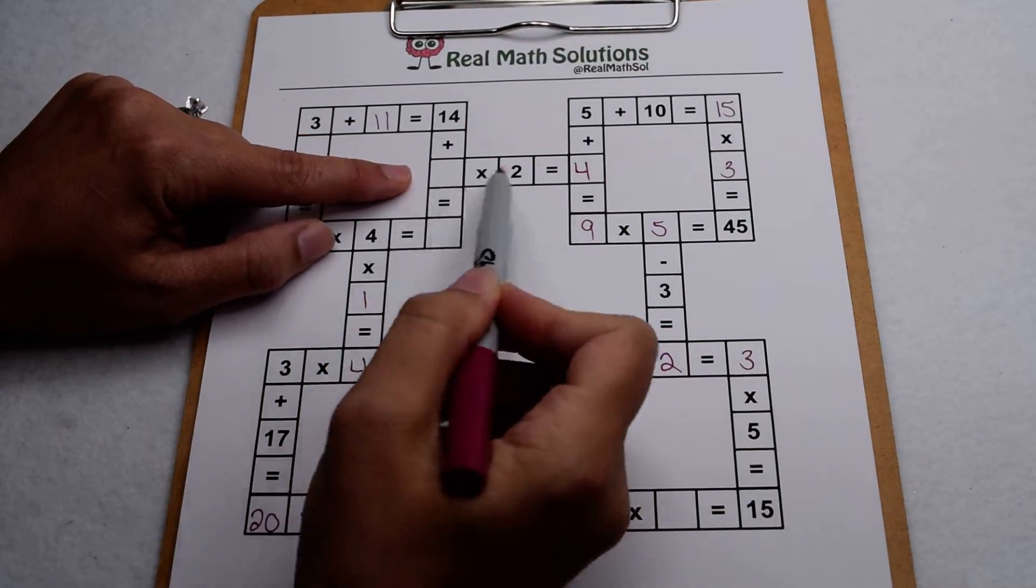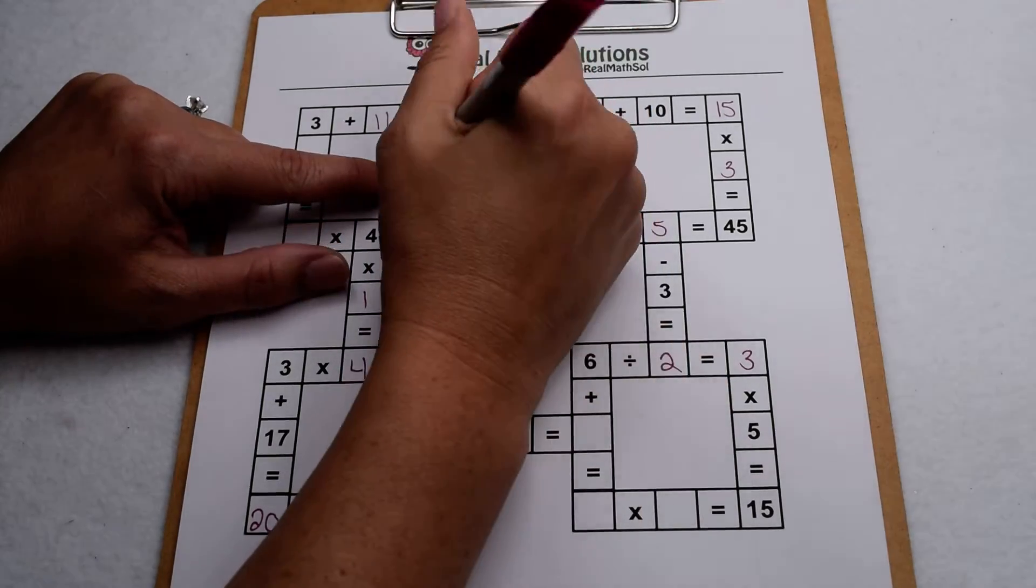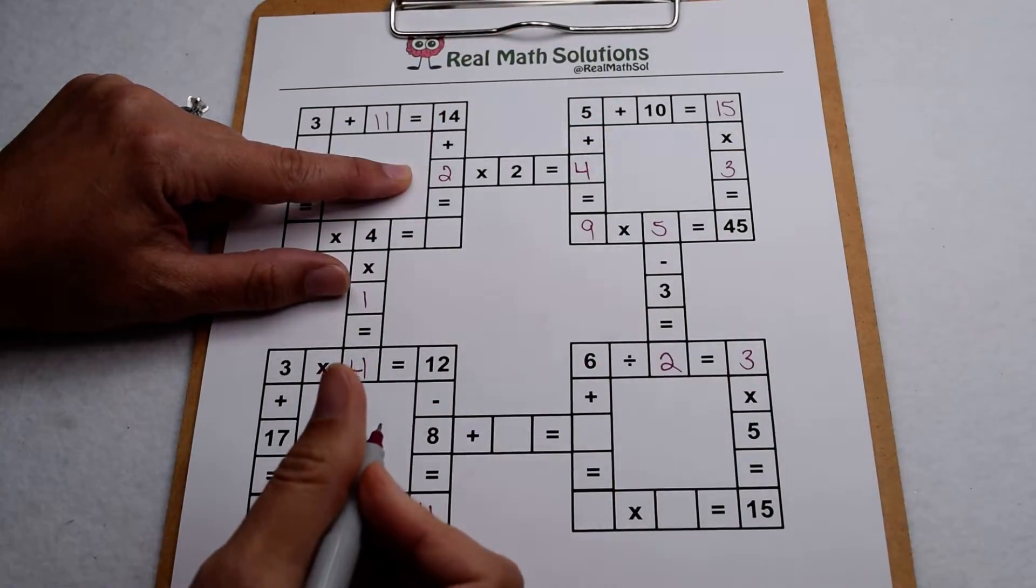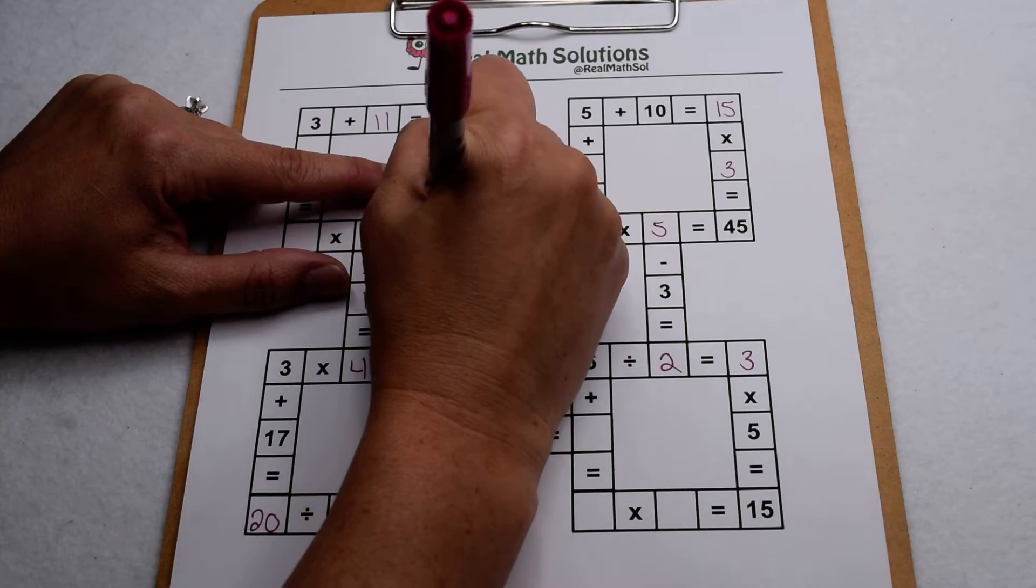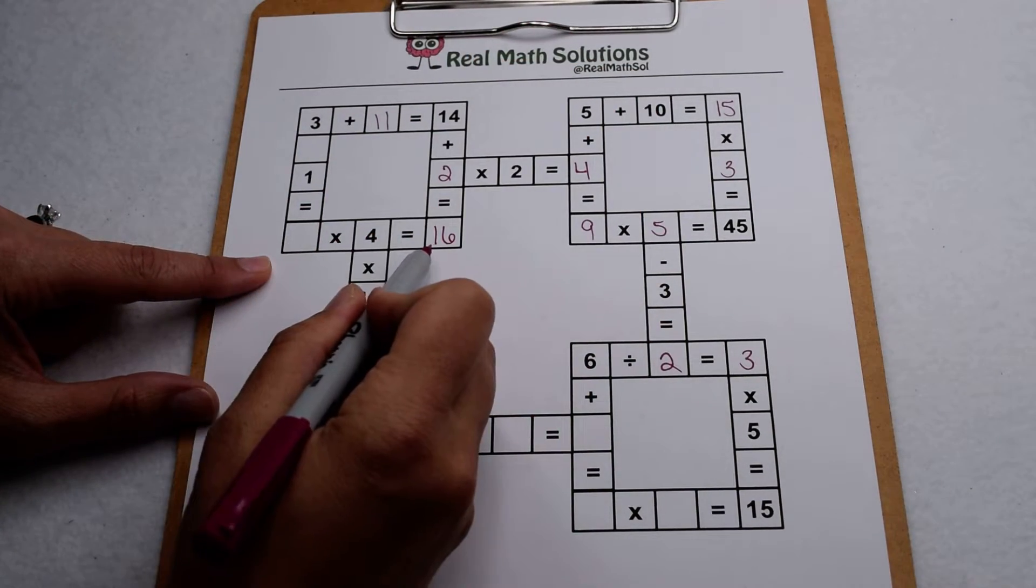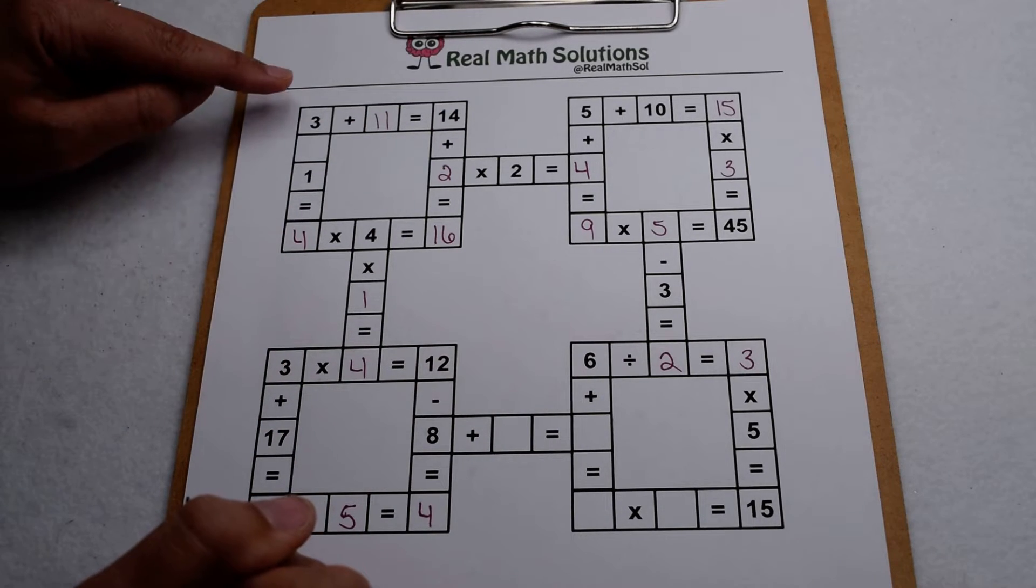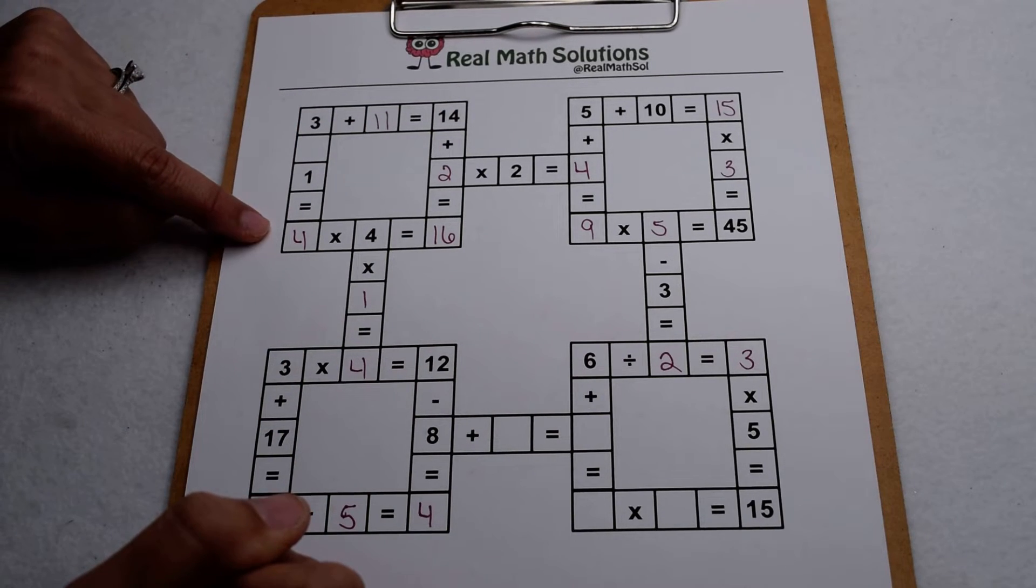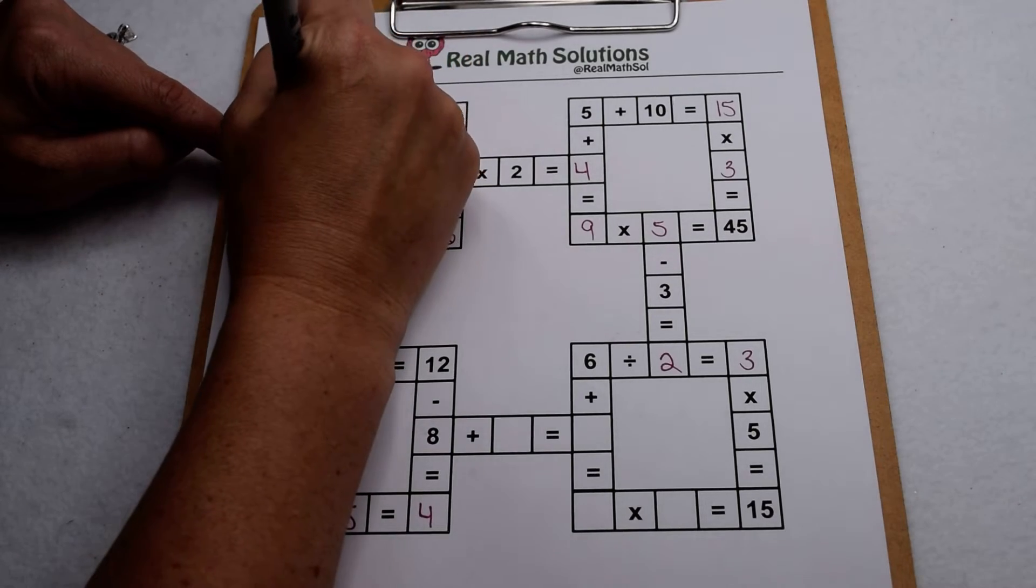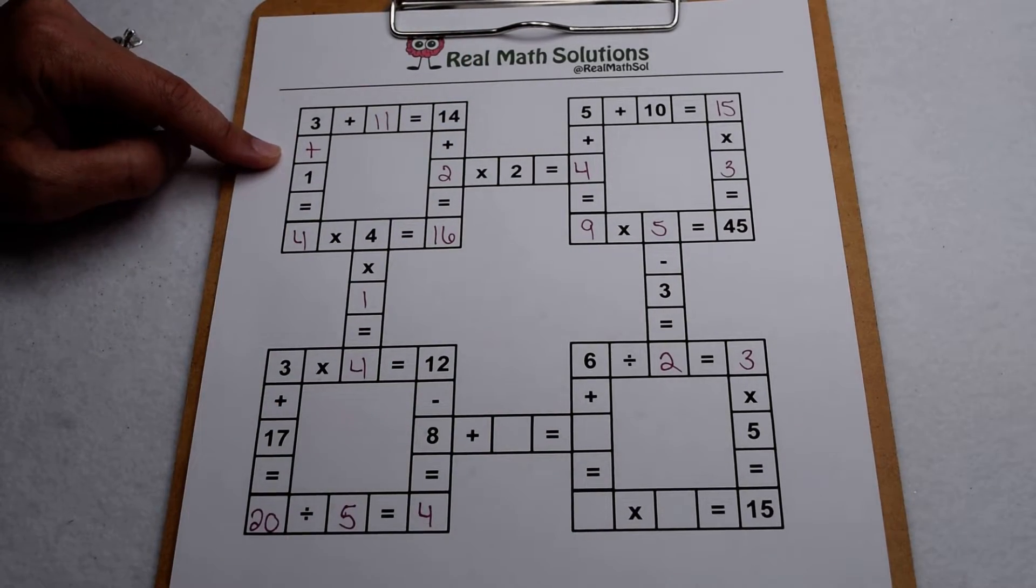This leads me back to the connector to my first box. Something times 2 gives me 4 so there's my 2. Add those together, 14 plus 2 gives me 16. Now I can finish this part going across because I know 4 times 4 gives me 16. So now 3 and what with 1 give me 4. I know to get to 4 I have to add those together so I can fill in the addition sign.